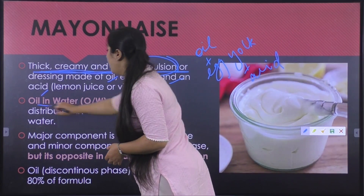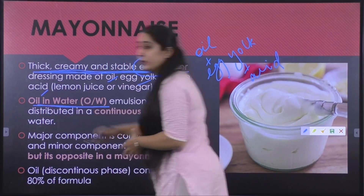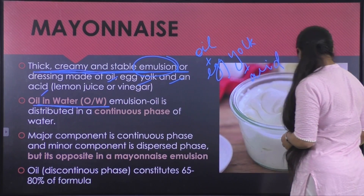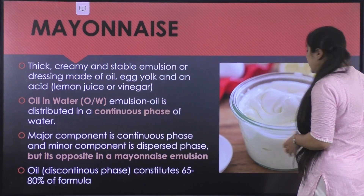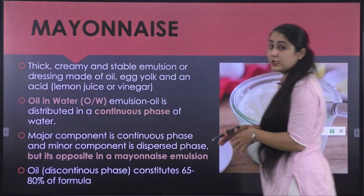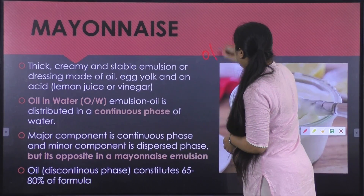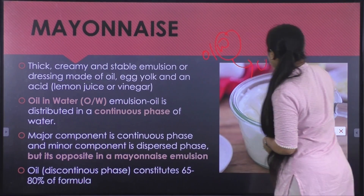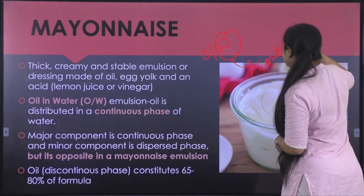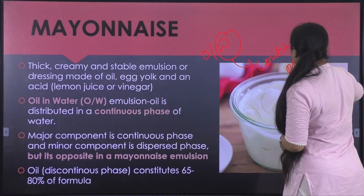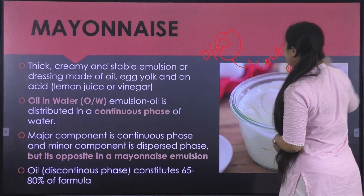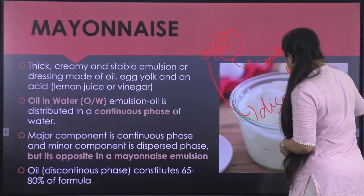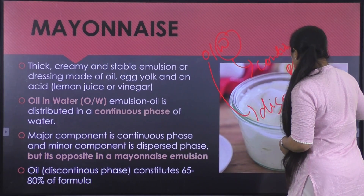Mayonnaise is basically an oil-in-water emulsion. When we say oil-in-water emulsion, we mean that the oil is dispersed in the water. Water is the continuous phase and oil is the dispersed phase, so oil is dispersed in the water.